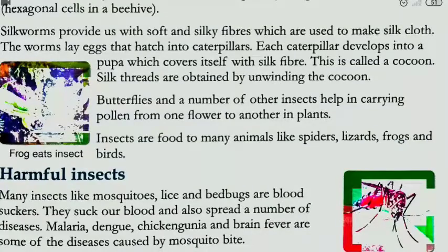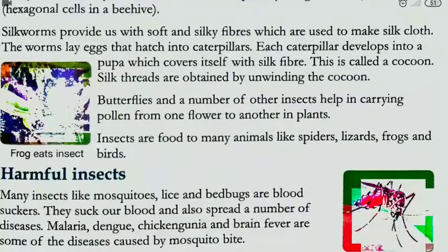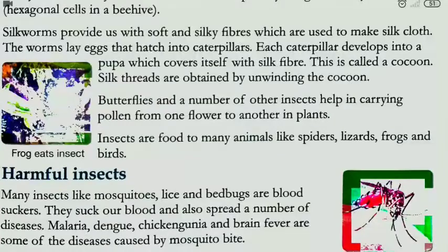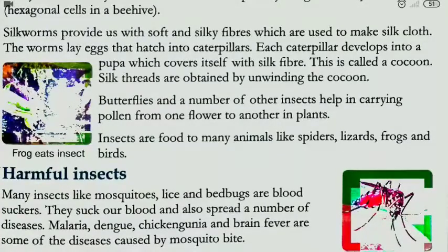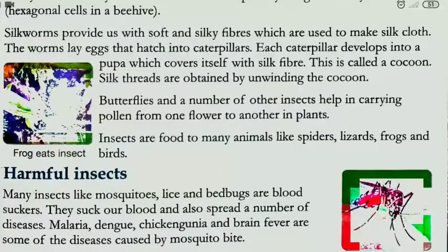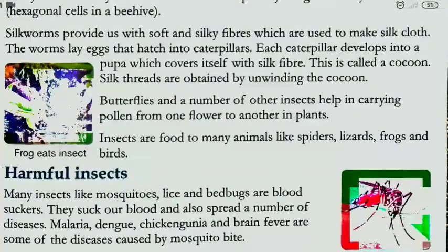Insects jo pollen grain ko carry karne mein — yaani ki ek flower se doosre plant ke flower tak pohunchate hai. Insects aur food of many animals — yaani ki jo macchar hote hai, woh bohot saare animals ka khana hote hai, jaise agar hum baat kare spiders ki, chipkali ki, frogs ki — toh ye sab kya khaate hai? Ye sab insects khaate hai.